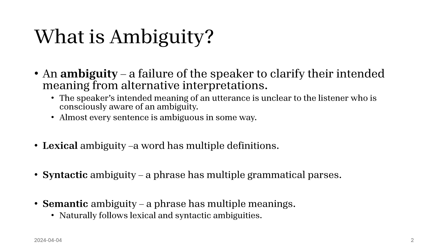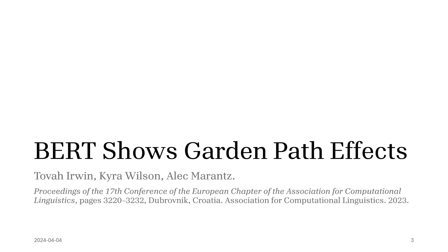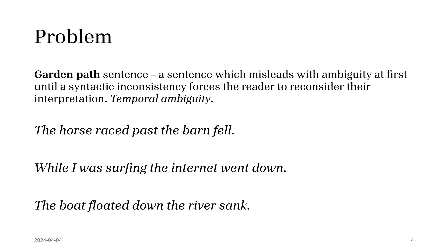That's the background needed for garden path sentences, which are initially ambiguous and cause you to misread a noun as a verb. They're very confusing at first, and you'll see some examples. This is a paper on BERT — a transformer model — and it shows garden path effects very similar to humans. The problem is garden path sentences, which mislead with ambiguity at first until a syntactic inconsistency forces the reader to reconsider their interpretation.